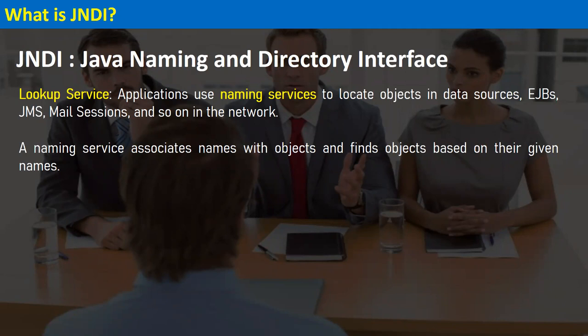JNDI is a kind of a lookup service, also called a naming service. Whenever an application needs to connect with any resource created on the WebLogic server, it first connects with the help of JNDI. For example, we may define many WebLogic JMS resources, data sources, and other resources when we configure our domain.